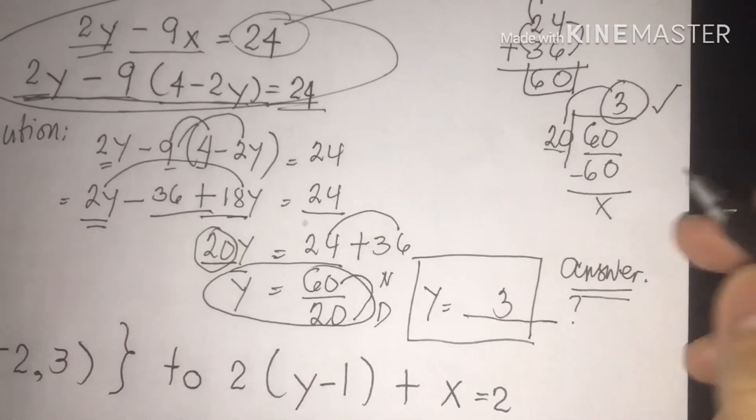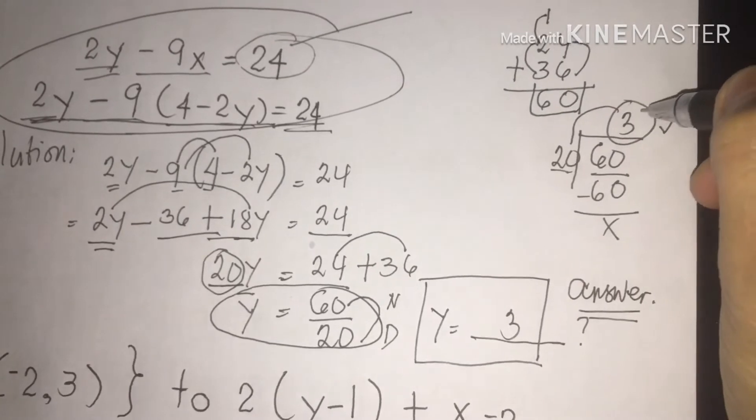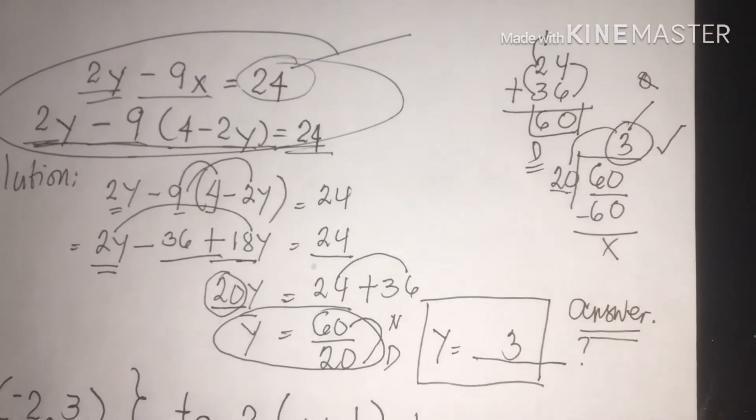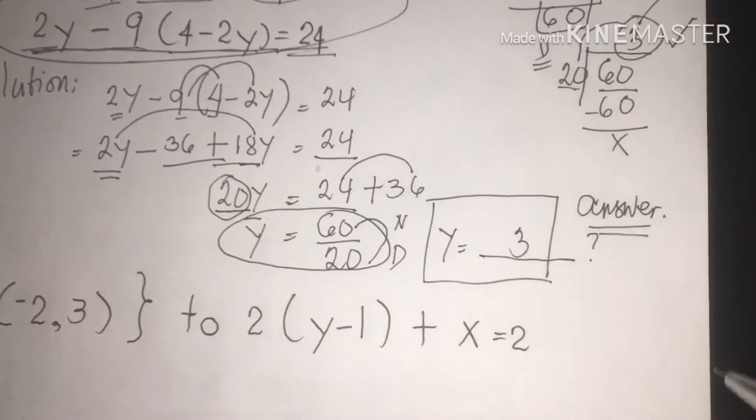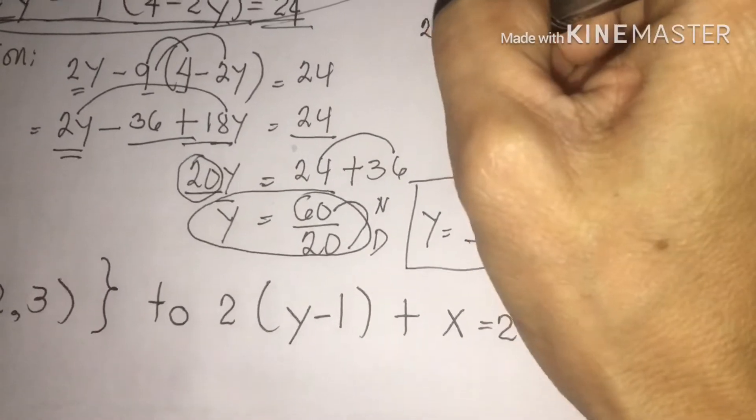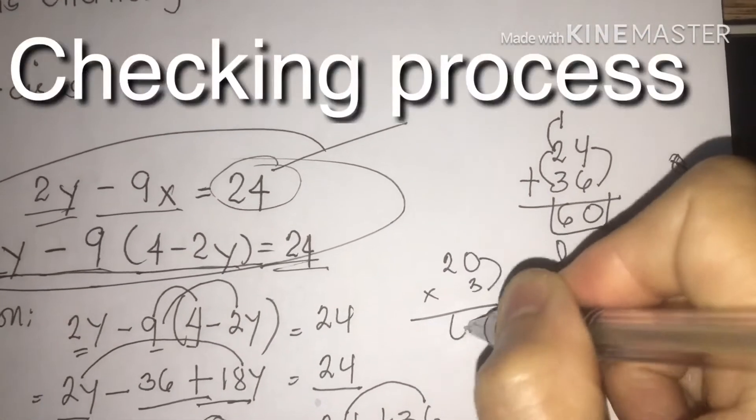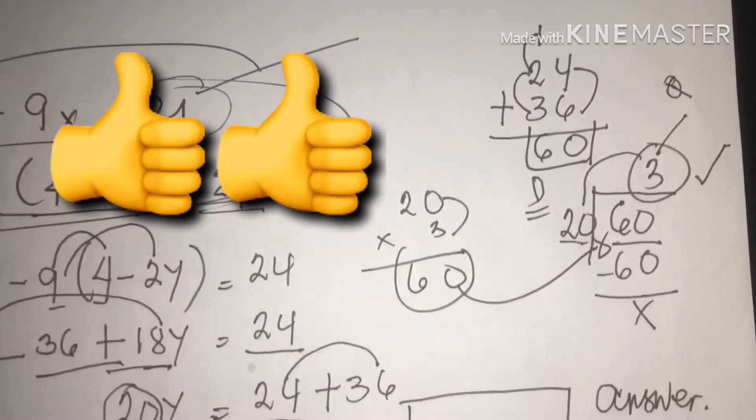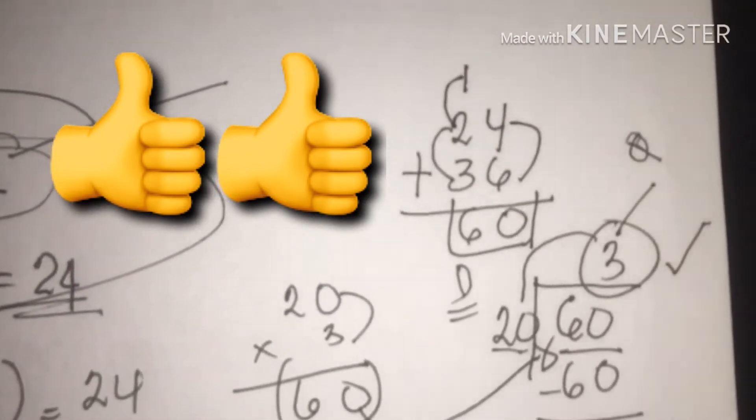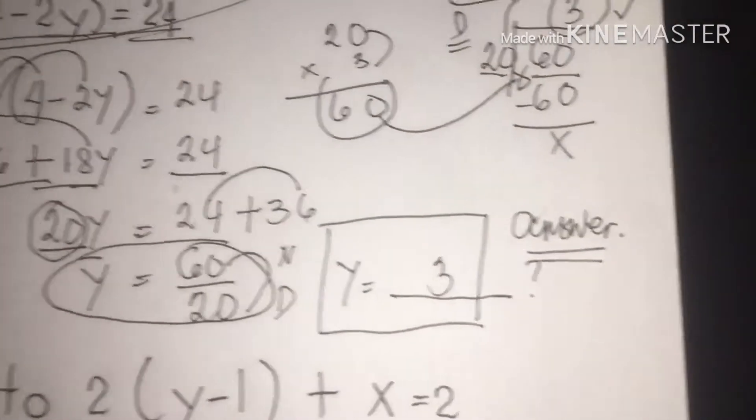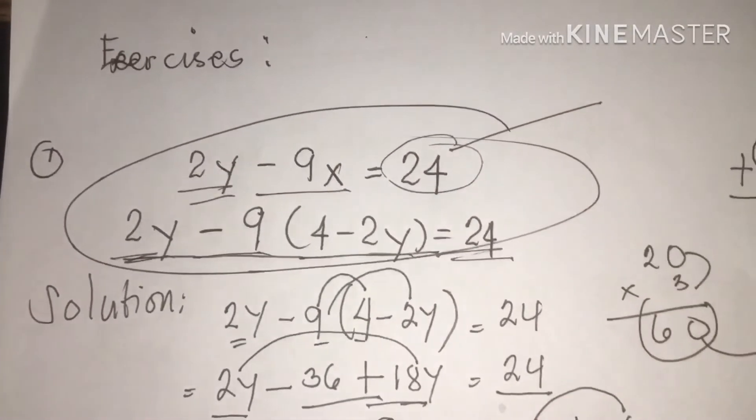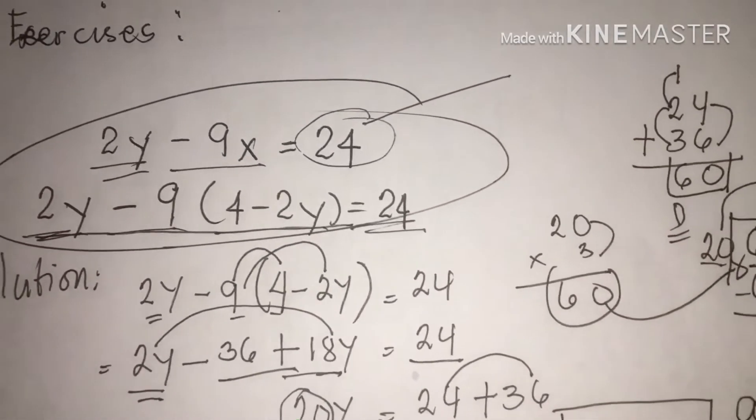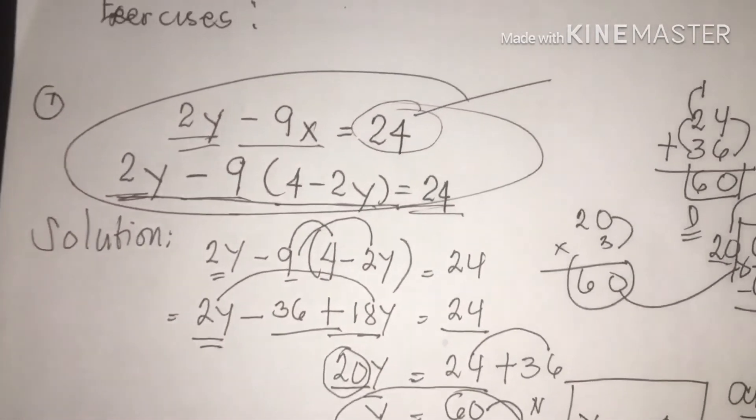And how you are going to check it? Simple. You are going to multiply quotient to divisor. 20 times 3 equals 60. That is correct. That is how you are going to solve it, the first equation we have: 2y minus 9x equals 24. That is substitution method.